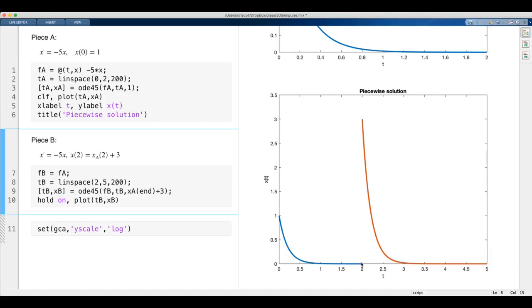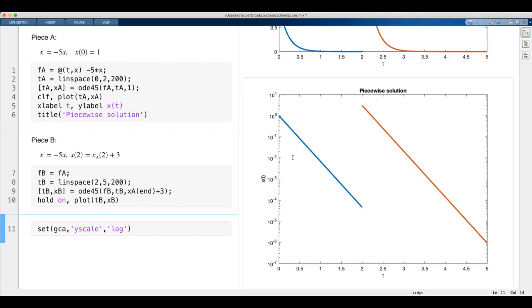It looks odd because there's a jump in the solution. It's not continuous anymore, but that's correct. It looks more transparent on a log scale because exponential decay is just a straight line. We have exponential decay, then suddenly inject more into the solution, then it exponentially decays again after that.